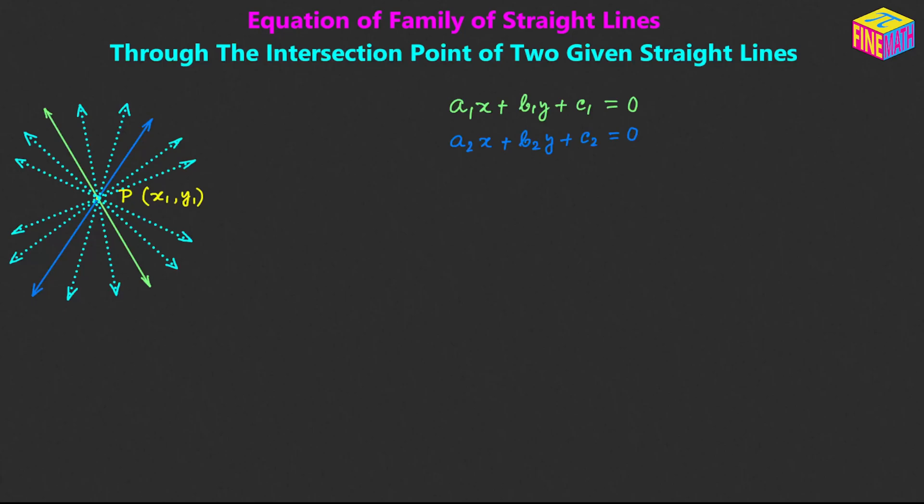I am going to give a name to the left-hand side expression of each of the equations, and then write the equation by satisfying it with the coordinates of point P. Since P lies on both lines, the coordinates of P should satisfy both equations. If we satisfy the first equation with the coordinates of P, we can write it like this. Similarly, if we satisfy the second equation, we can write it like this.